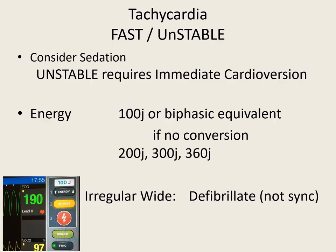Prior to 2020, you needed to know the different rhythms to start at a different energy level. But they've smoothed it out in 2020. Now you're just starting at 100. If that doesn't work, go to 200. If that doesn't work, go to 300. If that doesn't work, go to 360. They've smoothed it out for synchronized cardioversion in 2020.